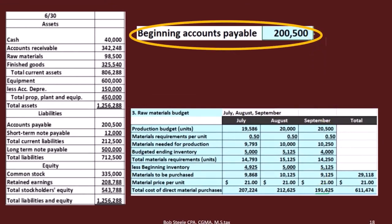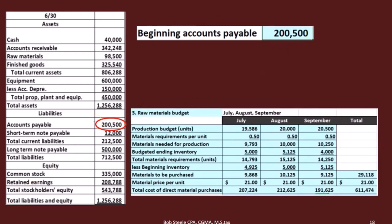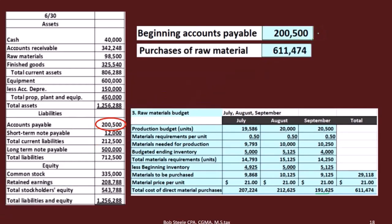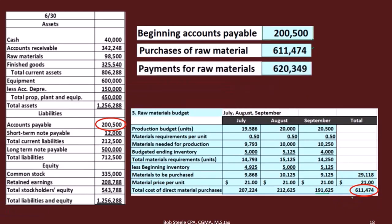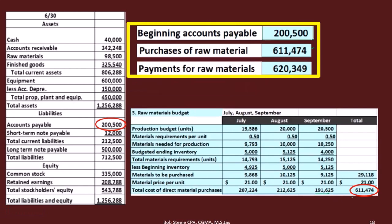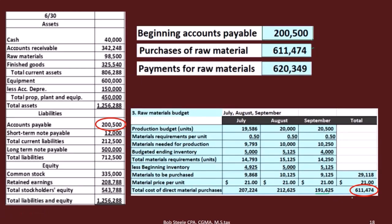In this setup, we purchase everything on account and then pay for everything the following month. We started with $200,500 in accounts payable — that's what was in there at the end of last month and the beginning of this period. Then we had purchases of raw materials. The assumption is that we purchased all of it on account — for the entire quarter, we purchased $611,474, all on account. That would increase the accounts payable.